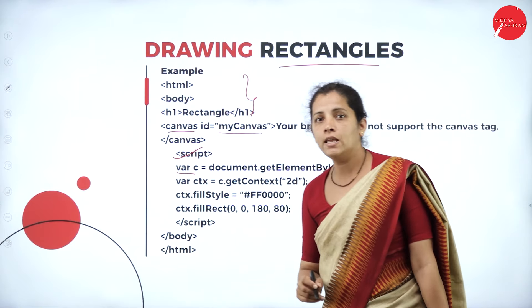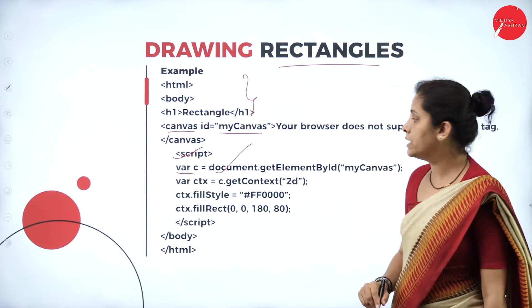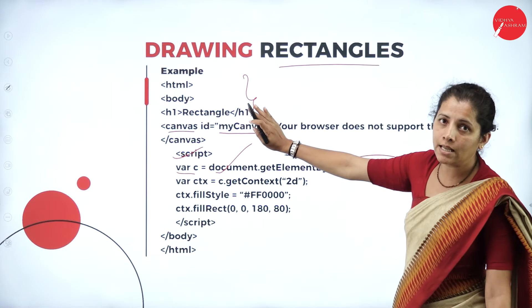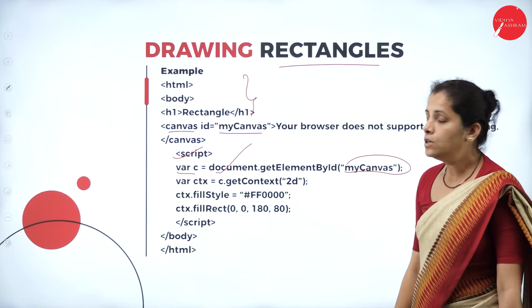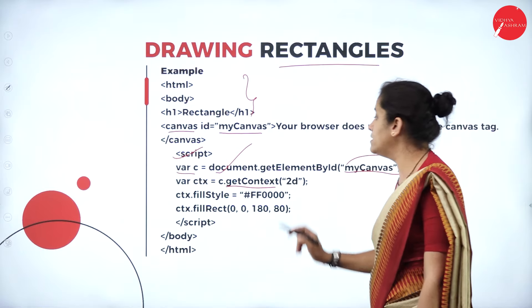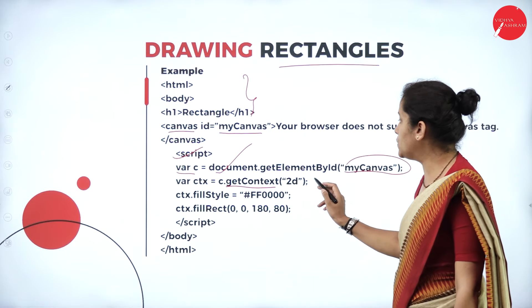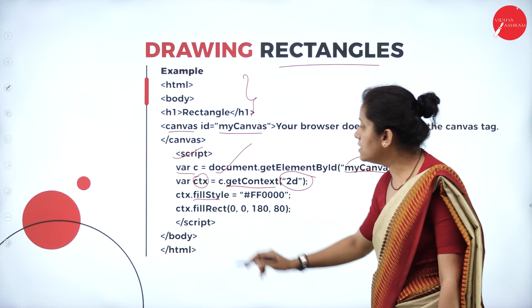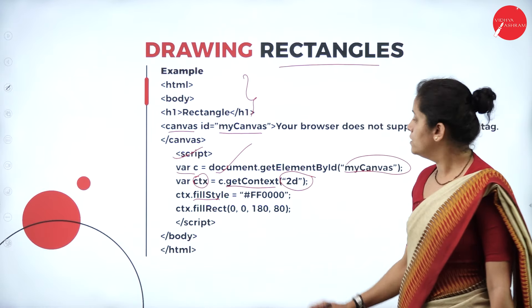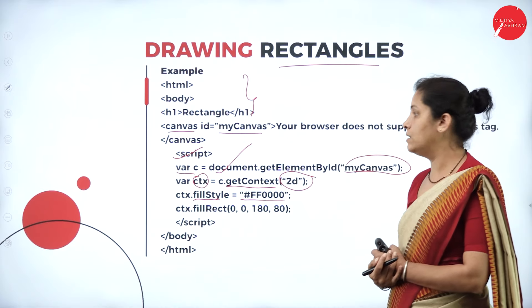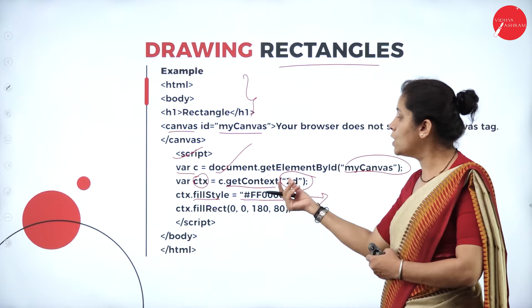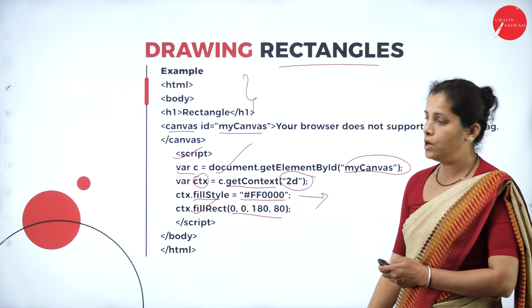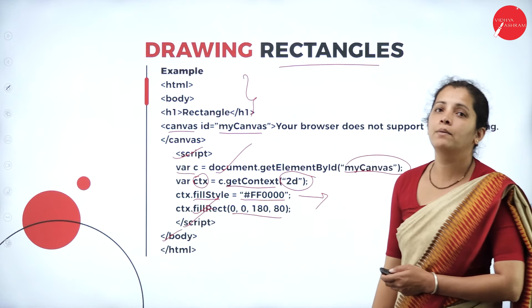I'm going to consider a variable called 'c'. Using document.getElementById, I pass my canvas id 'myCanvas'. Then I create a rendering context using getContext for 2D. By using the variable, I call the attribute fillStyle and set a hexadecimal color code. Then I call fillRect and pass the coordinate values. Finally, I close the script, body, and HTML tags.